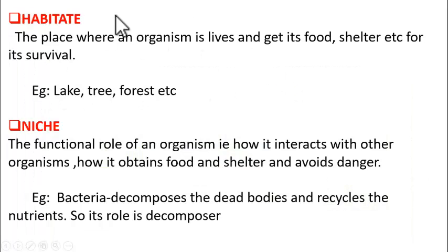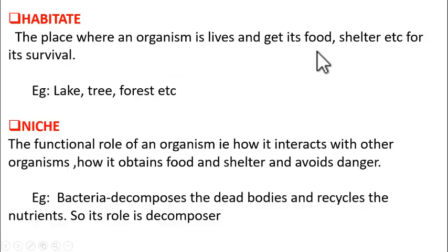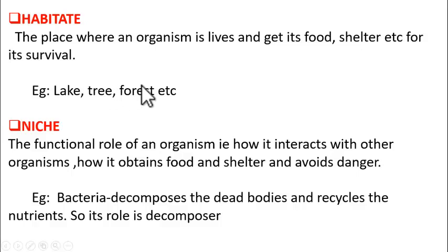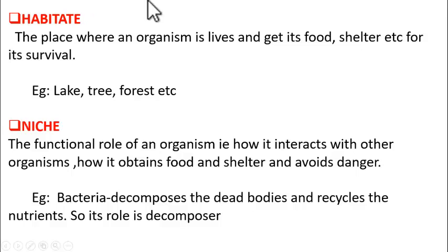There are two important terms in this chapter you need to understand: habitat and niche. What is habitat? Habitat is the place where an organism lives and gets its food, shelter, etc. for its survival. Simply, the place where an organism lives is its habitat. For instance, different habitats include lake, trees, forests, and grasslands — these are all habitats where living organisms survive.